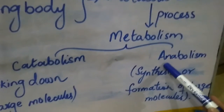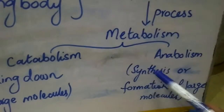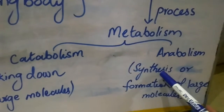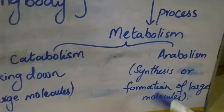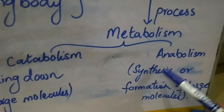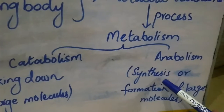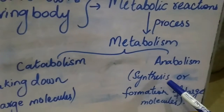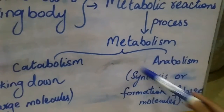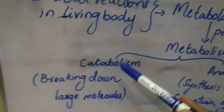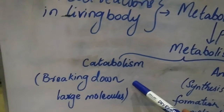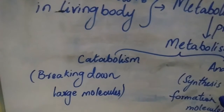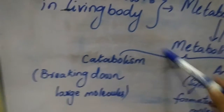Now what is anabolism? Anabolism is basically the vice versa of catabolism. In anabolism, synthesis or formation of large molecules takes place. For example, the production of proteins and carbohydrates — these are large molecules, and when the formation of such molecules takes place, that is called anabolism. When the breaking down of large molecules takes place, such as glucose breaking into smaller parts, that process is called catabolism.